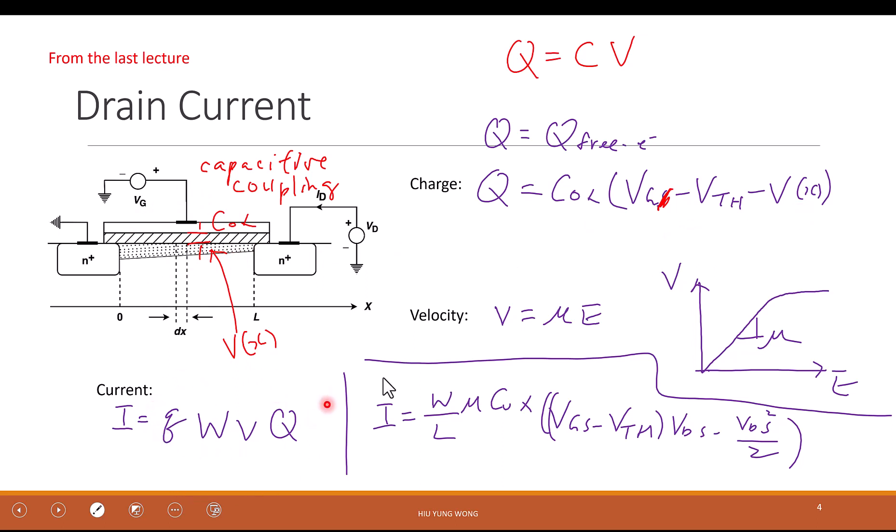And we did not derive it. We just use all the equations that you learn in E128. You will be able to come up with this equation. And again, this equation is important. And let me remind you again, why it's important? I mean, how do we understand this equation? Well, the current, of course, depends on the width and the length of the transistor. Because it's a resistor.